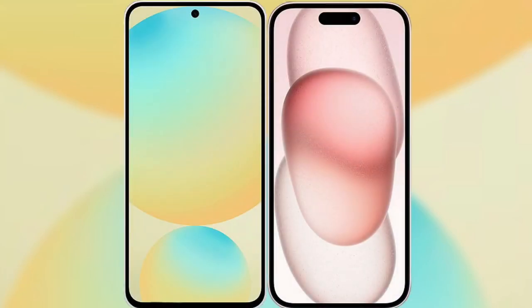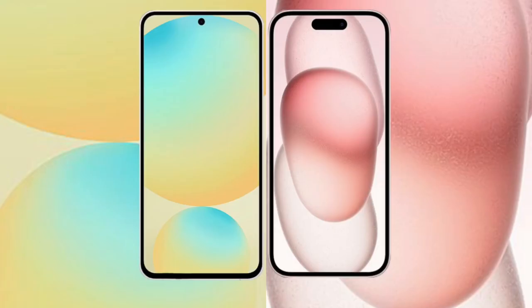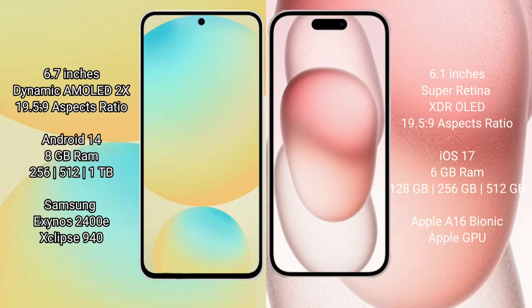I will compare the new Samsung Galaxy S24 FE with iPhone 15. Samsung Galaxy S24 FE has a 6.7-inch dynamic AMOLED display with an aspect ratio of 19.5:9. iPhone 15 has a 6.1-inch Super Retina XDR OLED display with an aspect ratio of 19.5:9.